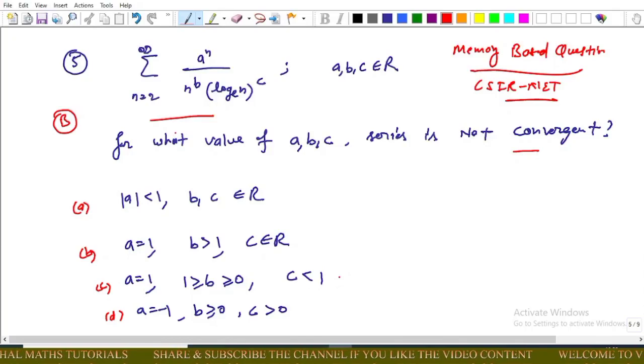In this video, we will discuss the memory-based question of CSIR net. Question 5 is actually dependent on a convergent and divergent series question. For a given series, we have to find out the value of a, b, c such that the given series is not convergent.